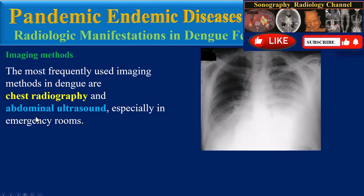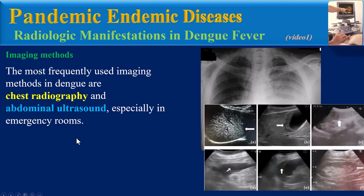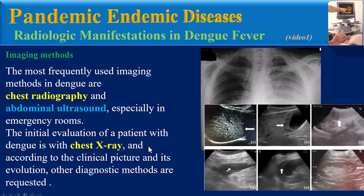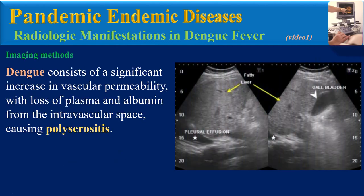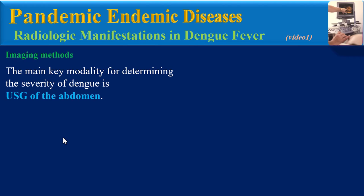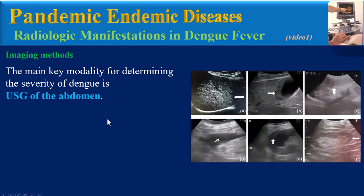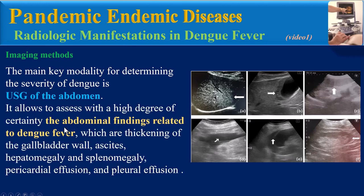The most frequently used imaging methods in dengue are chest radiography and abdominal ultrasound, especially in emergency rooms. Initial evaluation begins with a chest X-ray, and other diagnostic methods are requested according to the clinical picture. Dengue involves a significant increase in vascular permeability with loss of plasma and albumin from the intravascular space, causing polyserositis. The main imaging modality for determining severity is abdominal ultrasound, which allows assessment of abdominal findings including gallbladder wall thickening, ascites, hepato and splenomegaly, pericardial effusion, and pleural effusion.